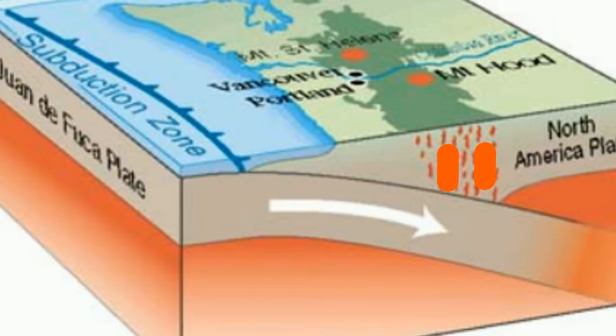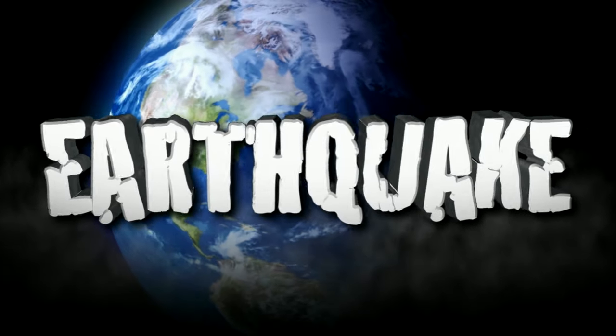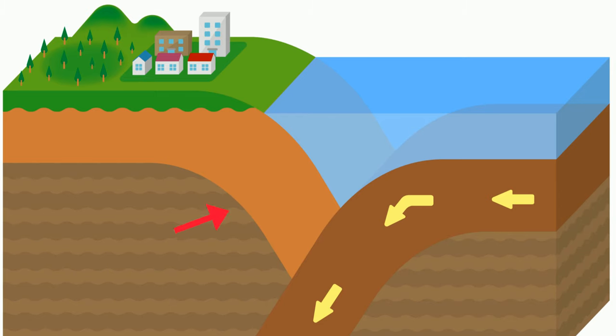As it sinks, magma is formed and begins to rise to the surface and may form volcanic mountains. Earthquakes may also occur and deep trenches may be formed.